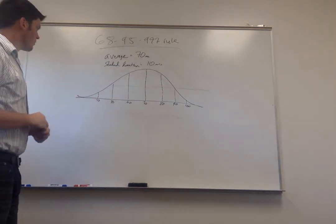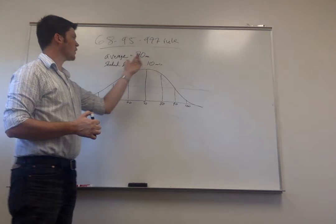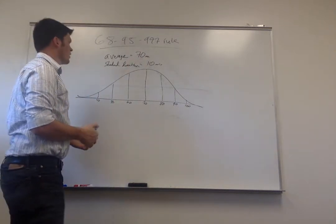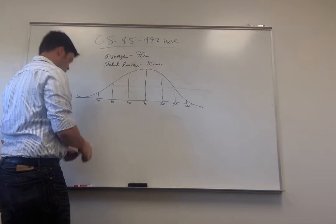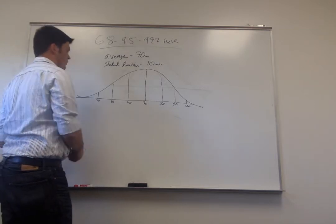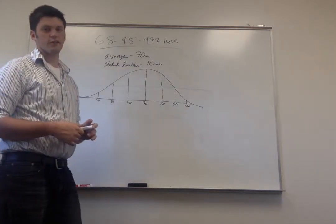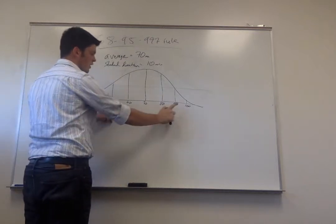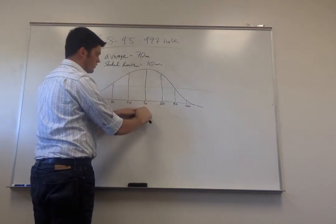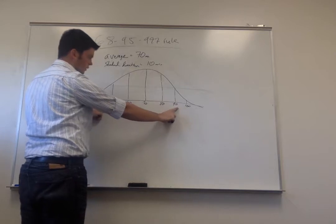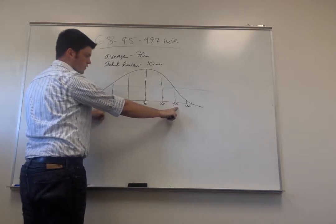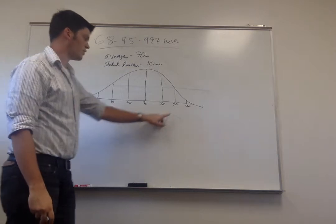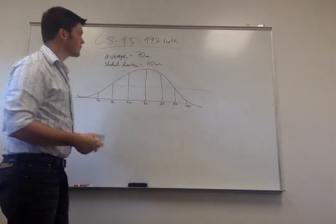The 68-95-99.7 rule tells us that, for example, 95% of the students who take a test in this school are going to finish within 50 and 90 minutes, because that's two standard deviations away from the mean in both directions.